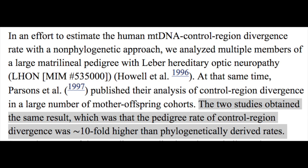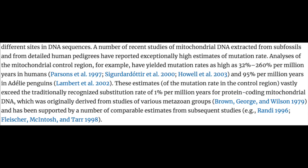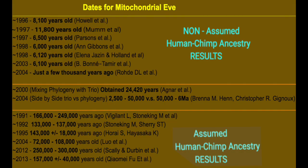How do you explain that data, RJ? I may have to read the section I did on it with Jackson in the book. This paper right here — modeling the recent common ancestor of all living humans — the most recent common ancestor of all present-day humans lived just a few thousand years ago in these models. Now, based on the empirical method, based on pedigree-based studies, mitochondrial Eve goes back just 6,000 years ago. I want to hear what you've got to say.